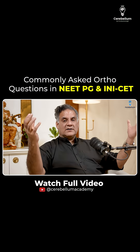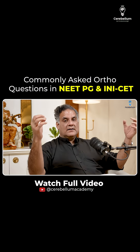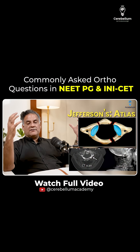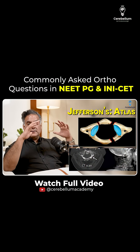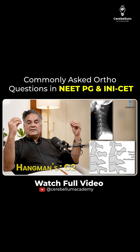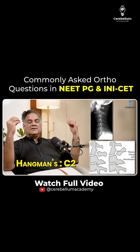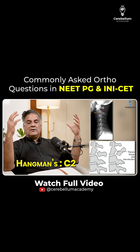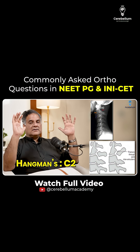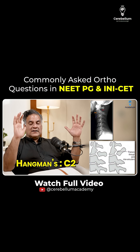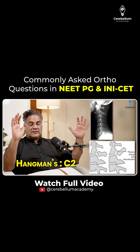Some important fractures of the spine: Jefferson's is a burst fracture of the atlas (C1). Hangman's fracture involves C2, with C2 over C3 slip. C1 and C2 injuries usually have less neurological deficit.